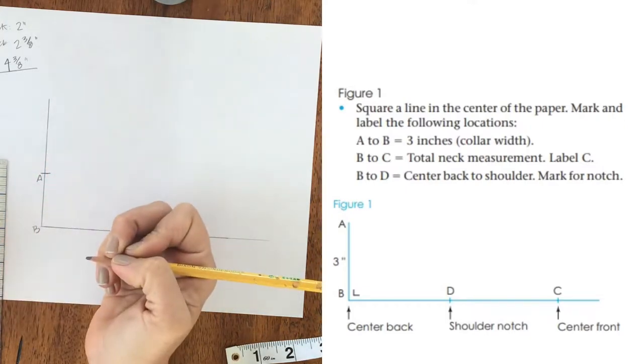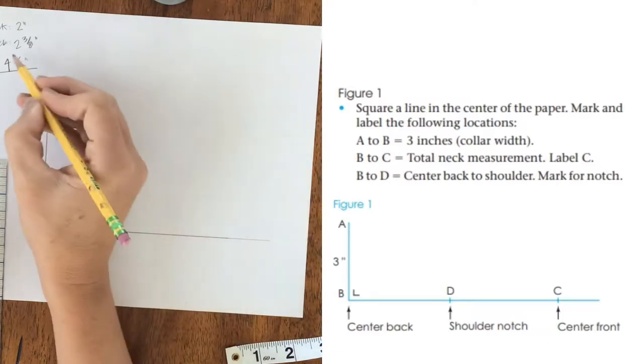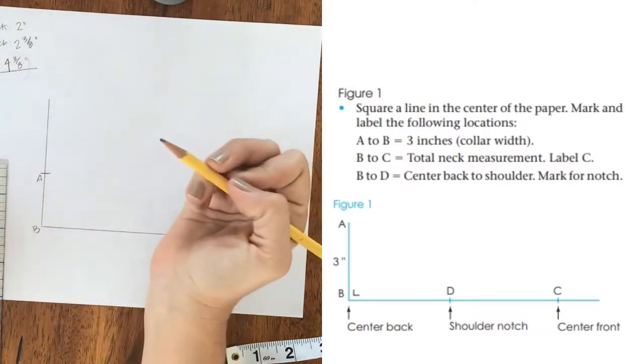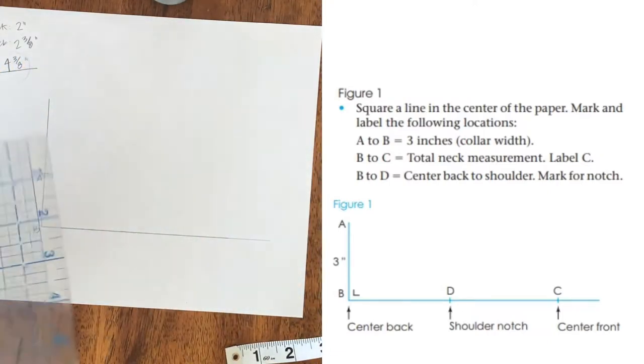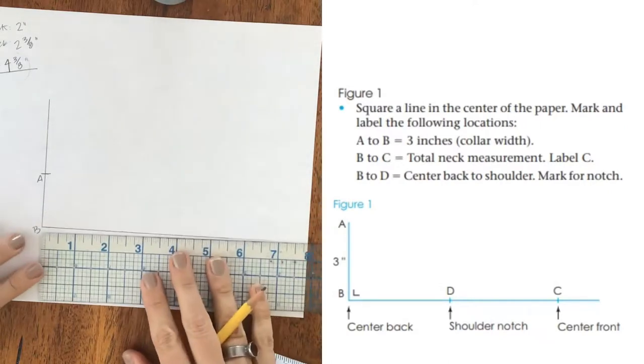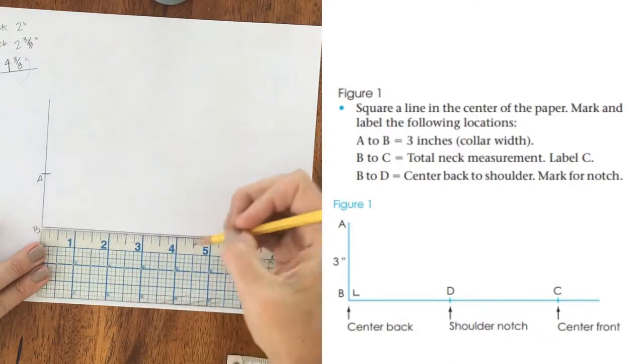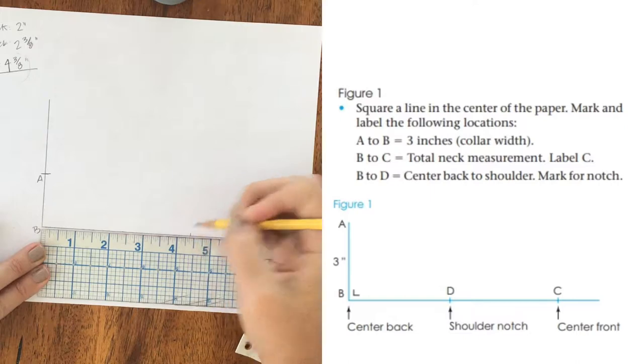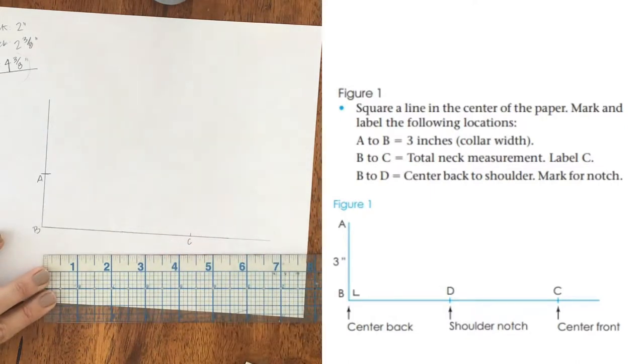B to C, they want my total neck measurement, which I measured at half scale, so I don't have to do any math with that. So that's going to be four and three eighths. And then B to D is going to be center back to shoulder, mark for notch.